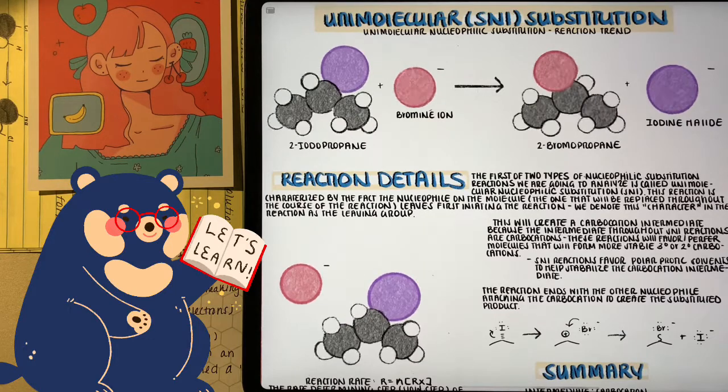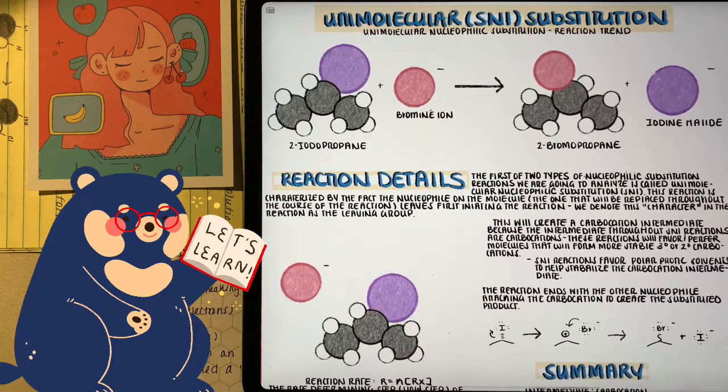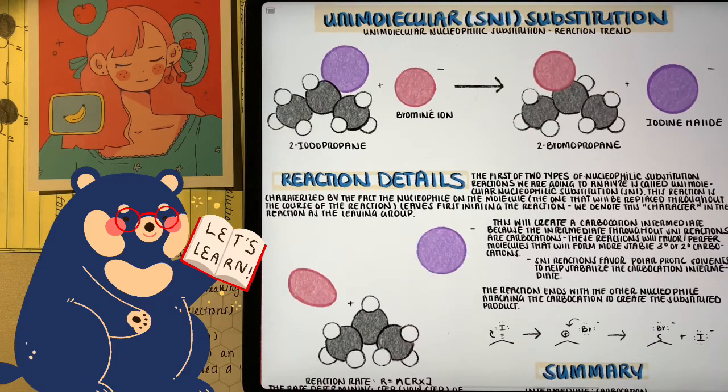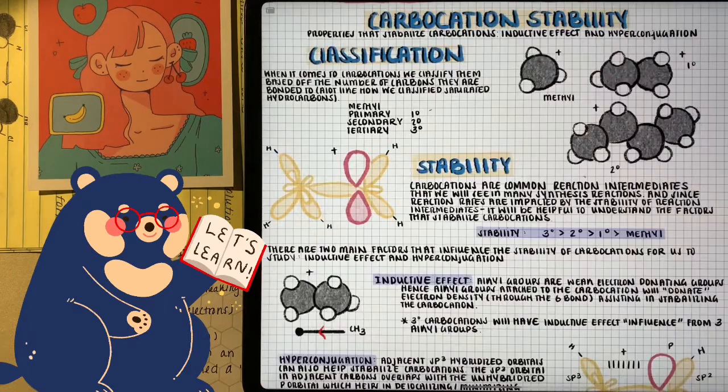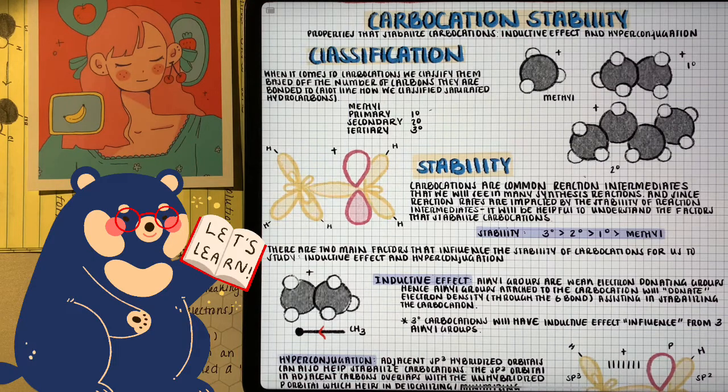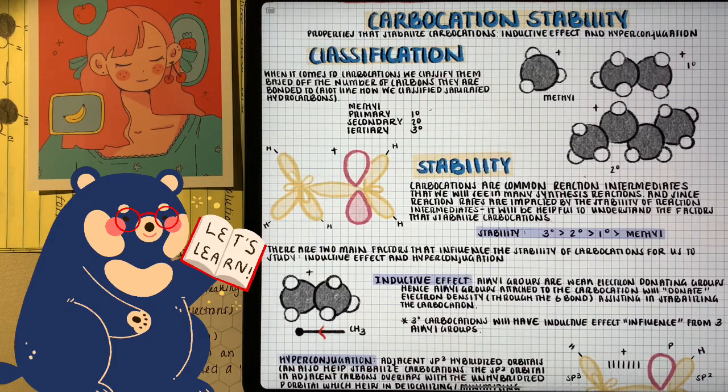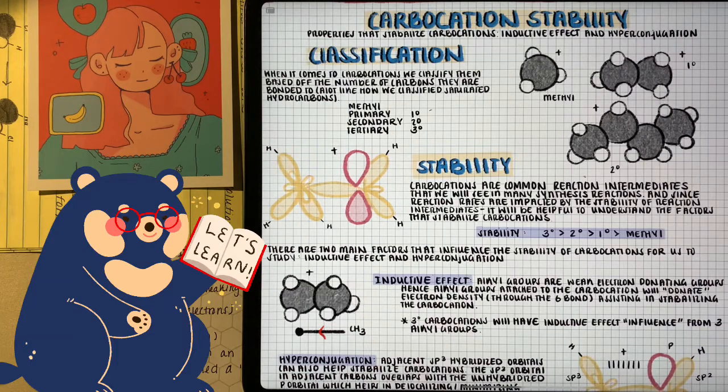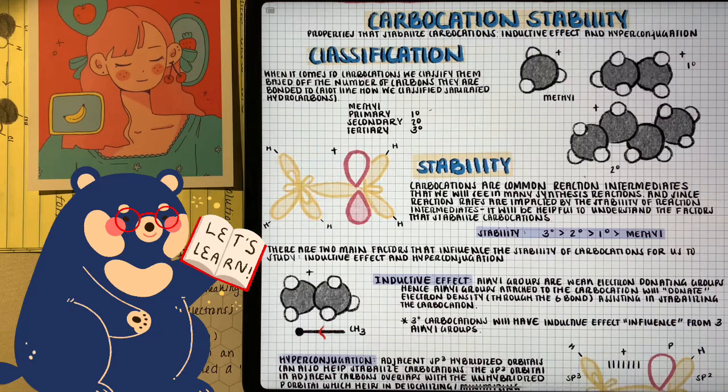Because we have a carbocation intermediate, that means that SN1 pathways are governed by stability of carbocations. And because of this, like we've seen before, stability of carbocations increases the more substituted they are. So we have methyl as the least stable, and then we gradually increase with primary, secondary, and tertiary. Because of this, SN1 reactions are limited through only reacting in cases where a tertiary or a secondary carbocation can form.